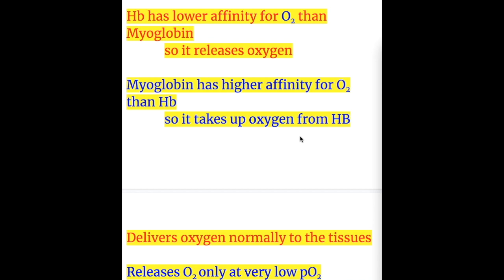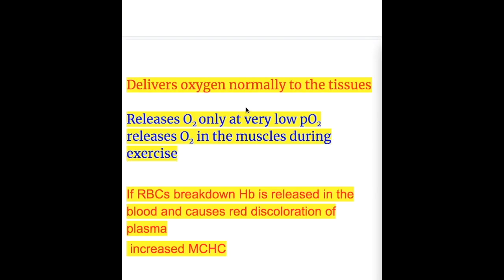Myoglobin has higher affinity for oxygen than hemoglobin; its curve is on the left and it takes up oxygen from hemoglobin. Hemoglobin delivers oxygen normally to the tissues, whereas myoglobin releases oxygen only at very low pO2, releasing oxygen in exercising muscles when the pO2 is very low.